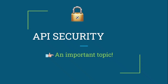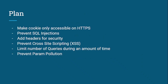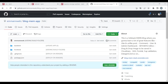Hi there, welcome back. In today's lesson we're going to talk about a very important topic: API security. API security matters when developing APIs. We're going to cover: making a cookie only accessible on HTTPS, preventing SQL injections, adding headers for security, preventing cross-site scripting (XSS), limiting the number of queries during an amount of time, and preventing parameter pollution.